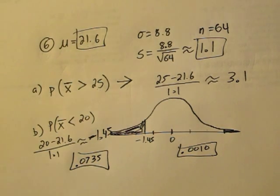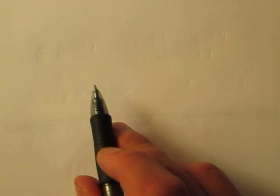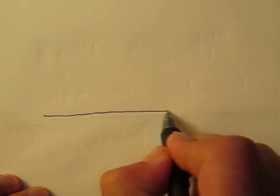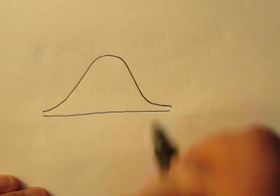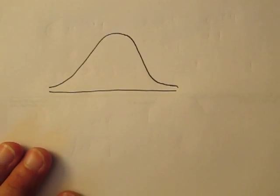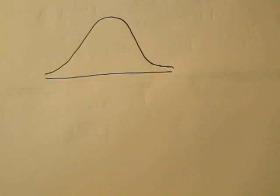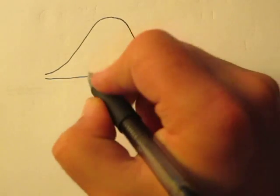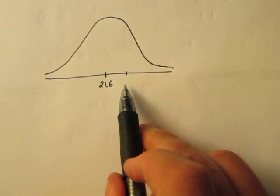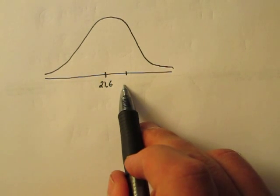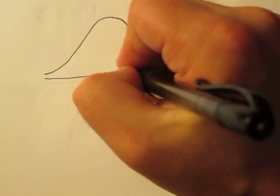Part c is a little trickier. In part c, we're interested in if the age will be between 22.2 and 25.5. Now the mean is 21.6. We got that from the first part a. And if the standard deviation is 1.1, one standard deviation to the right would be 22.7. And we're interested in 22.2. So let's say 22.2 is about here.